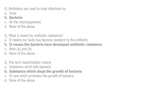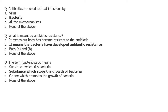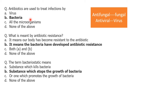First question: antibiotics are used to treat infections by — viruses, bacteria, all microorganisms, or none of the above? The answer is B, bacteria, as we use antibiotics to treat bacterial infections. The prefix 'anti' means against. Similarly, antivirals treat viral diseases and antifungals treat fungal infections.